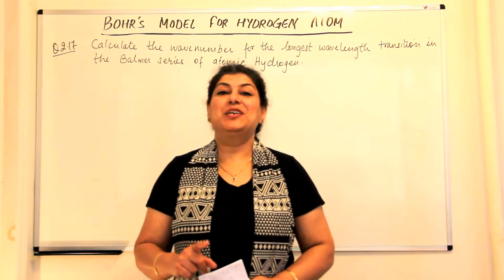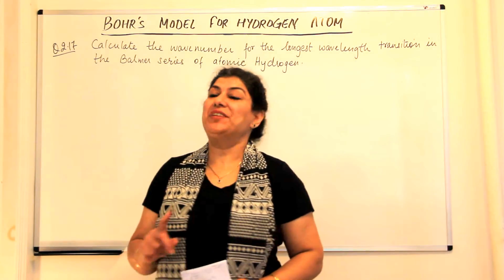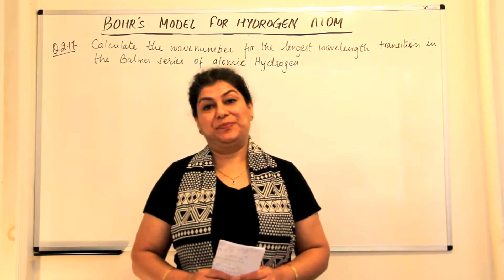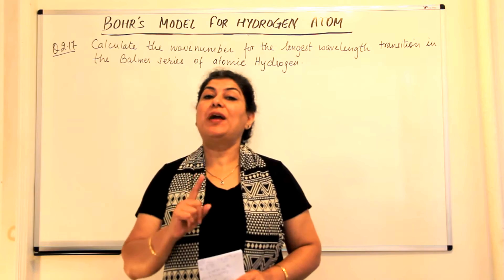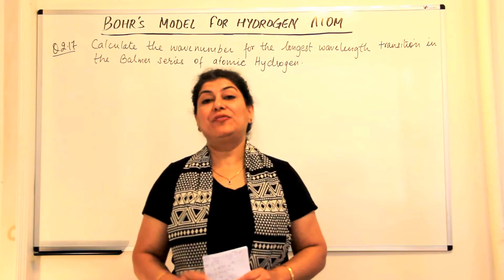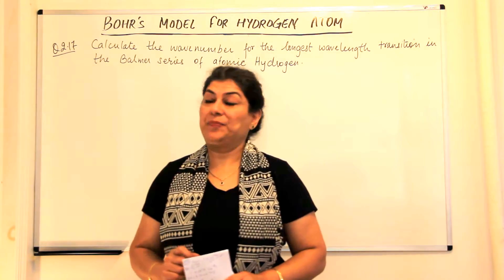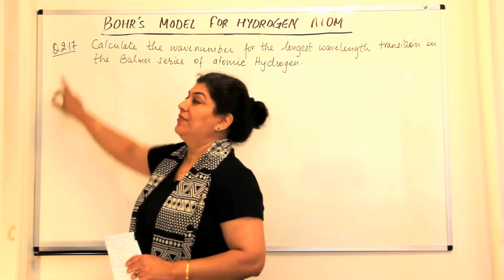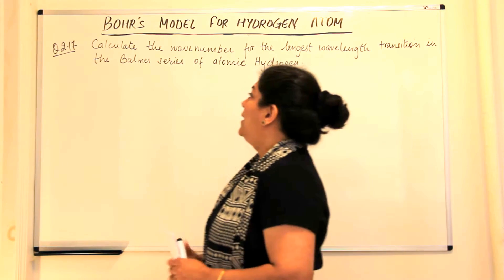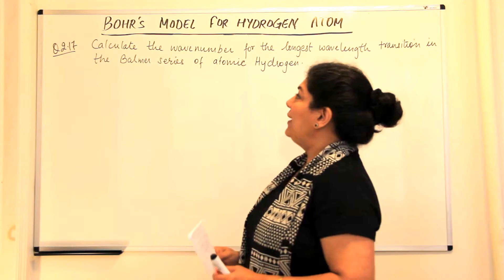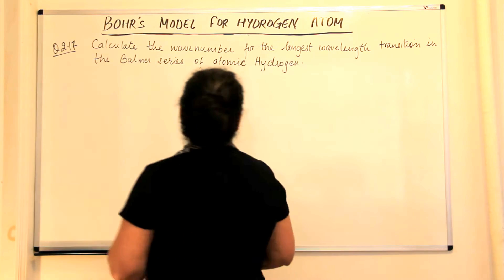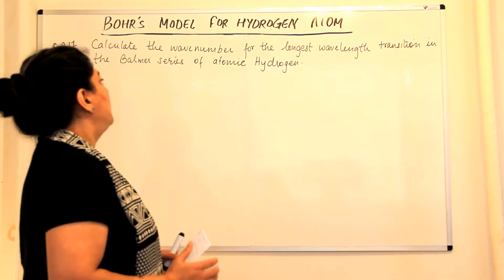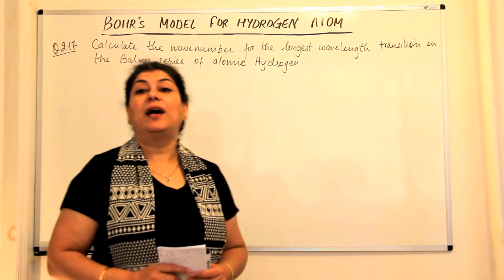I'm Seema and welcome to part 7 of the videos titled Bohr's Model for Hydrogen Atom. I'm going to solve one more numerical from the NCERT exercise. The question is the 17th question in the second chapter for class 11, and the question is: calculate the wave number for the longest wavelength transition in the Balmer series of atomic hydrogen.